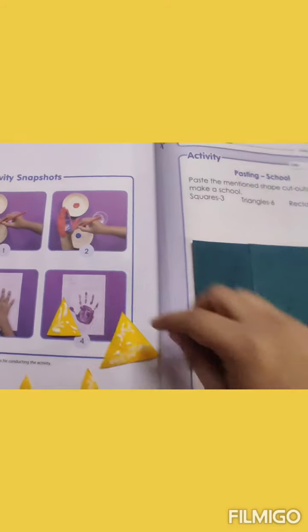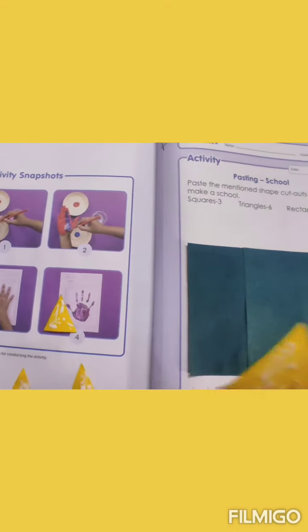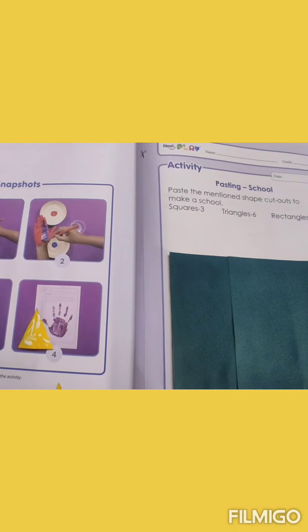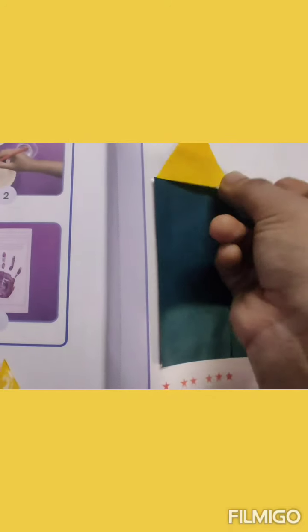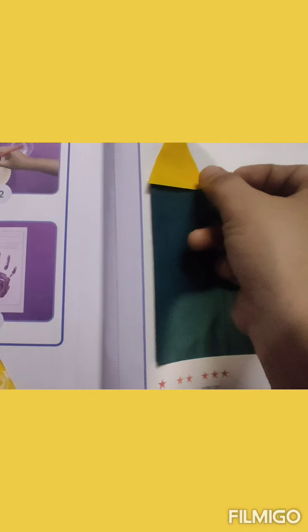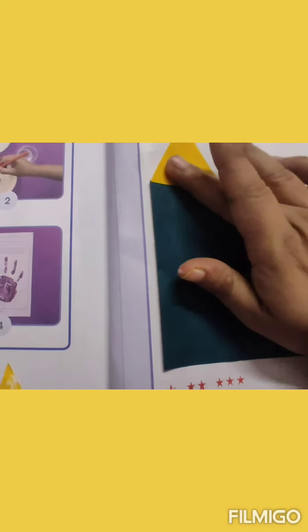So after pasting this, we will paste a triangle at the top. This is triangle, the big one. And we will paste it at the top of the rectangle. Alright, like this.